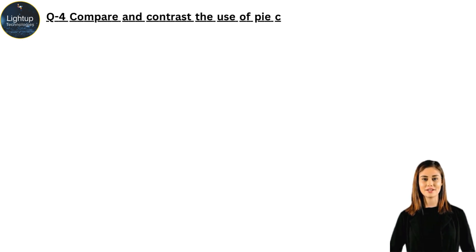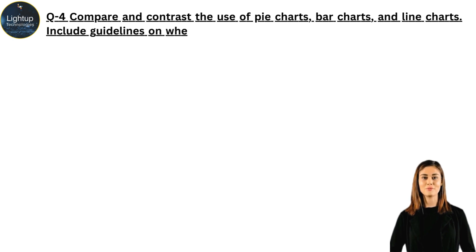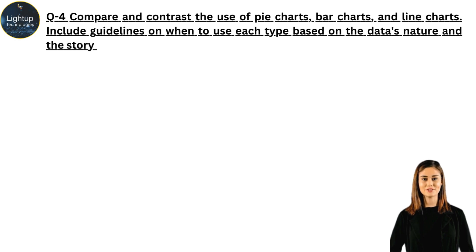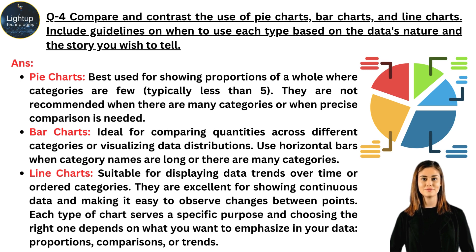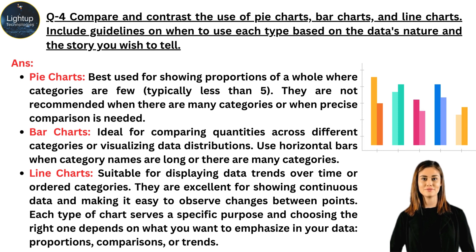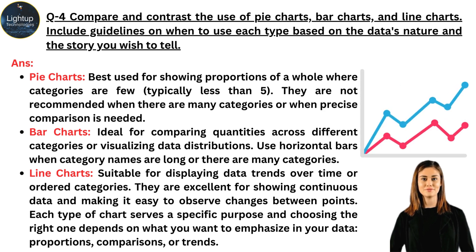Pie charts are best used for showing proportions of a whole where categories are few, typically less than 5. They are not recommended when there are many categories or when precise comparison is needed. Bar charts are ideal for comparing quantities across different categories or visualizing data distributions; use horizontal bars when category names are long or there are many categories. Line charts are suitable for displaying data trends over time or ordered categories, and are excellent for showing continuous data and making it easy to observe changes between points.